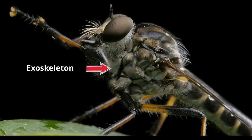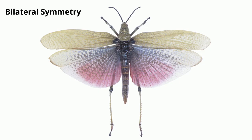Bilateral symmetry — all arthropods, including insects, have bilateral symmetry. This means that if you draw a line down the middle of their bodies, both sides will be identical to one another. Humans also have bilateral symmetry.